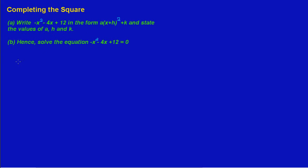We are given negative x squared minus 4x plus 12 and we're asked to complete the square, writing it in that form. When we look at the first term, we notice there's a coefficient of one, however this time it is negative. When we have a situation like that, what we have to do first is factor out our negative one.